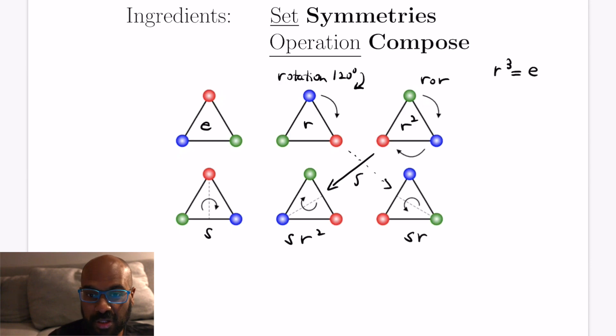We see that r cubed, rotating by 360 degrees, is the identity and s squared is identity as well. Reflecting along an axis and reflecting again will effectively do nothing. So this group, this set of symmetries, is called the dihedral group and we can look at compositions of the different elements to see what happens.